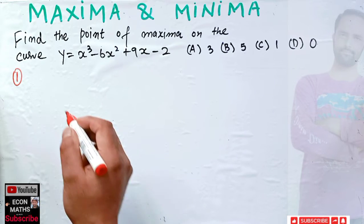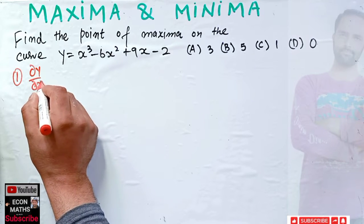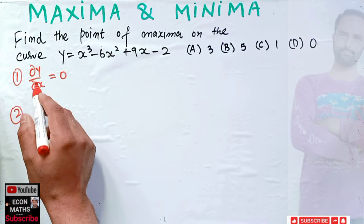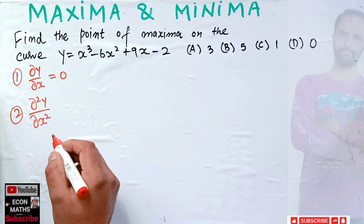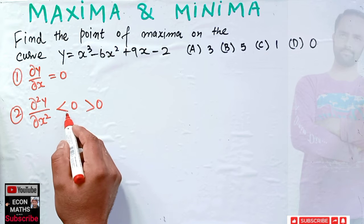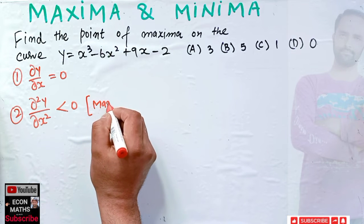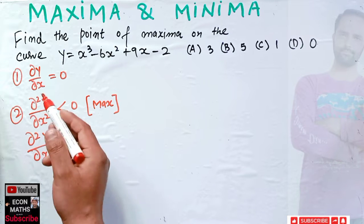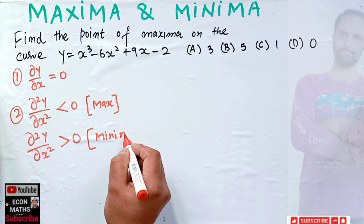The conditions for finding the maximum: the first condition is we take the first derivative dy/dx, set it equal to zero. The second condition is to take the second derivative d²y/dx² and check whether it is less than zero or greater than zero. If d²y/dx² is less than zero, we have a point of maximum. If it is greater than zero, we have a minima.